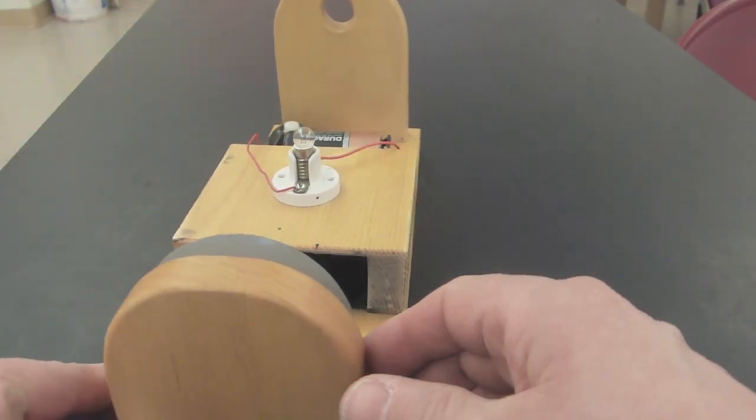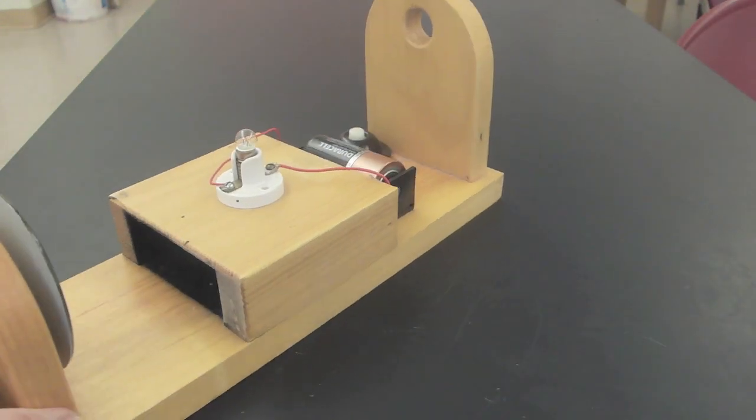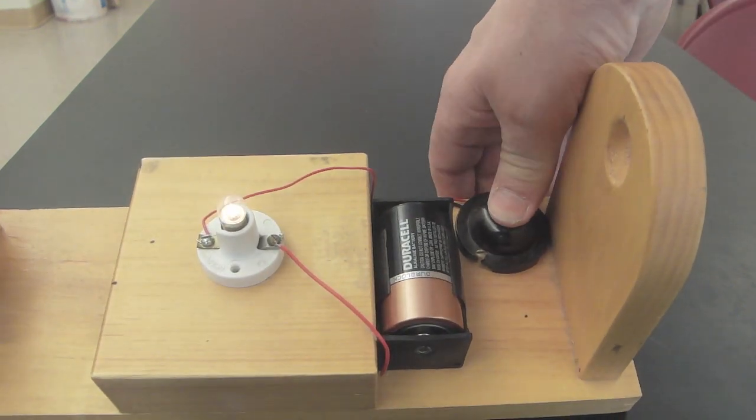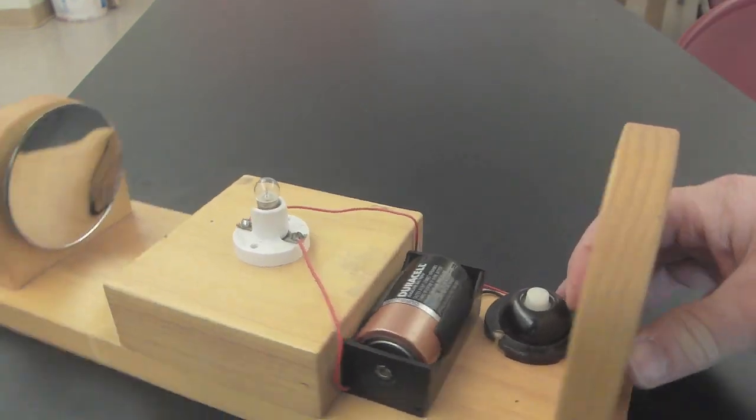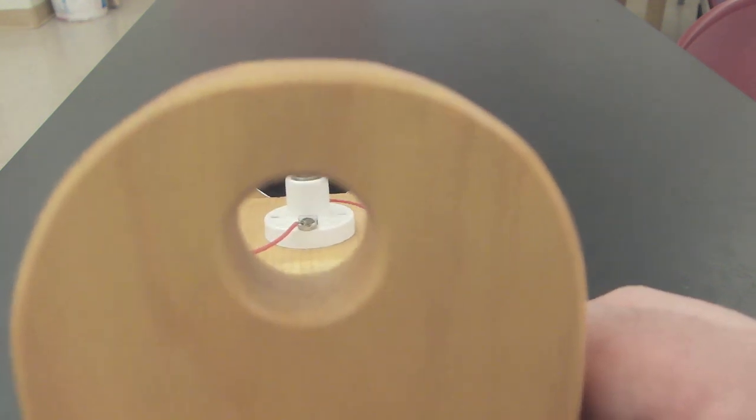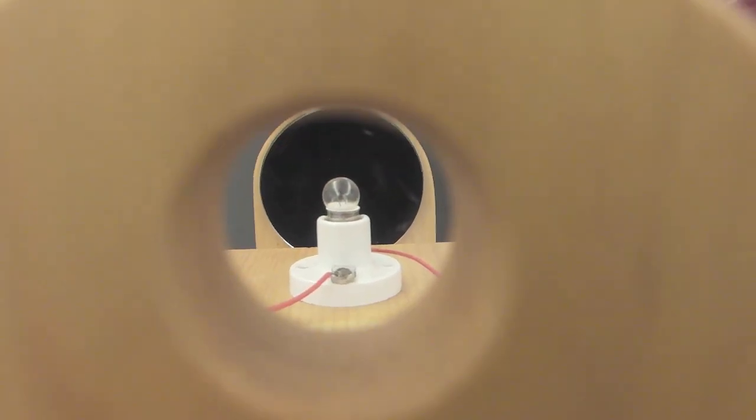Now, let me continue turning it around here. Take a look at the other side. Pretty much the same from either side. Once again, I push down on a button. That light goes on. And what I'm really concerned with is looking through this eyepiece. So, let's take a look together.